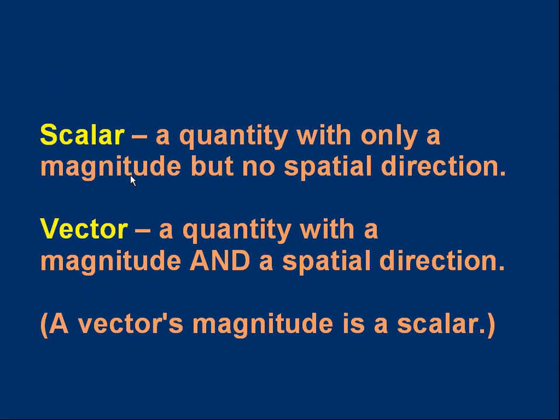So we can come up with a couple of definitions if we want them. A scalar: a quantity with only a magnitude but no spatial direction. A vector is a quantity with a magnitude and a spatial direction. You might want to note that a vector's magnitude is itself a scalar.